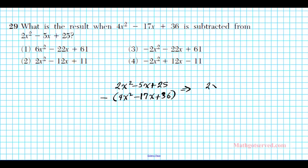And then this becomes 2x squared minus 5x plus 25. Now this is another mistake most people make. They forget to distribute this minus to all the terms. So you have to do that. So you have minus 4x squared plus 17x minus 36. Now that we've distributed the minus sign, we just simply add downwards and that should be a final answer. So let's go ahead and add downwards. We're going to have negative 2x squared plus 12x minus 11. And we can see that our answer is option number 4.